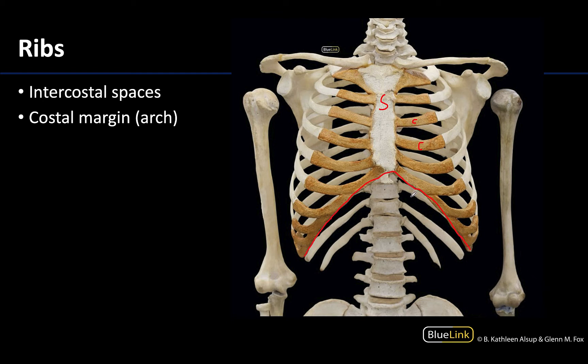The costal margin is something that you can palpate on yourself — it is basically the end region where you're heading into the wall of the abdomen. You don't have any bony structures on the anterior portion; you're left with this cartilaginous structure here, and then it's all musculature from here on in the anterior portion.